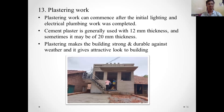Plastering work is done after the initial electrical and plumbing work has been completed. A cement plaster mix is used, typically 12mm thickness or sometimes 20mm thickness cement mortar. Plastering makes the building strong and durable against weather and gives an attractive look to the building.